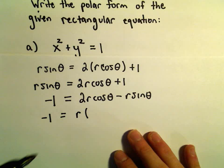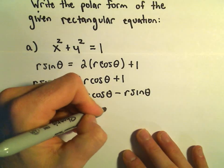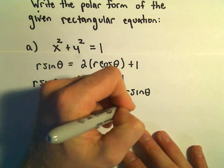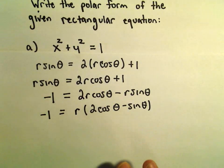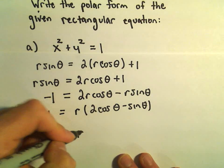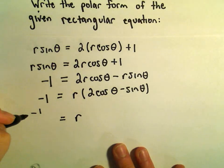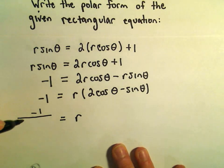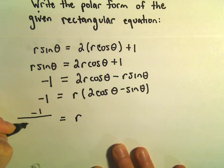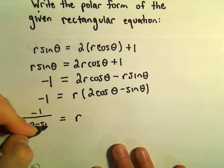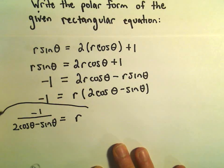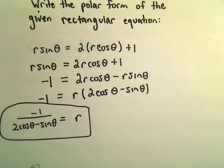And the reason for doing that is I can factor an r out. So if I pull the r out, we would need 2 cosine theta minus sine theta. And now simply to get the r by itself, we can divide both sides by 2 cosine theta minus sine theta. So we'll be left with negative 1 over 2 cosine theta minus sine theta. And I would say that would be a good place to leave that equation.